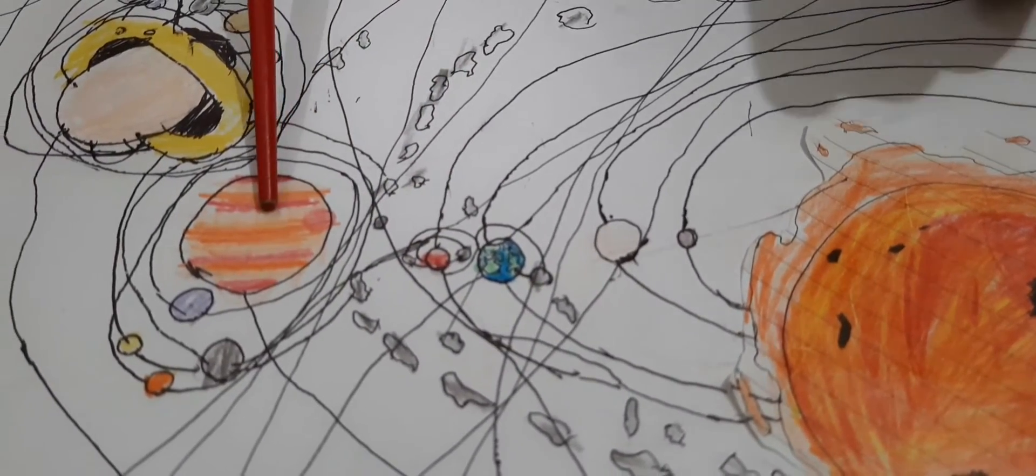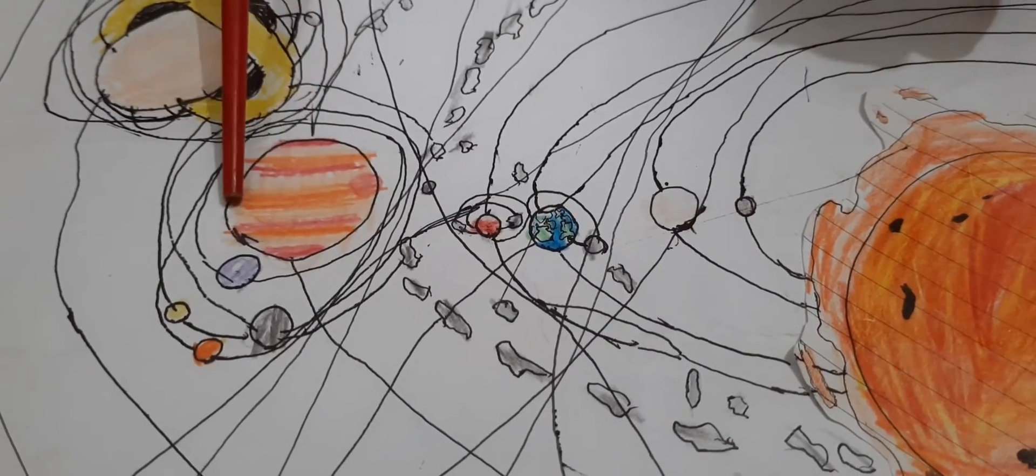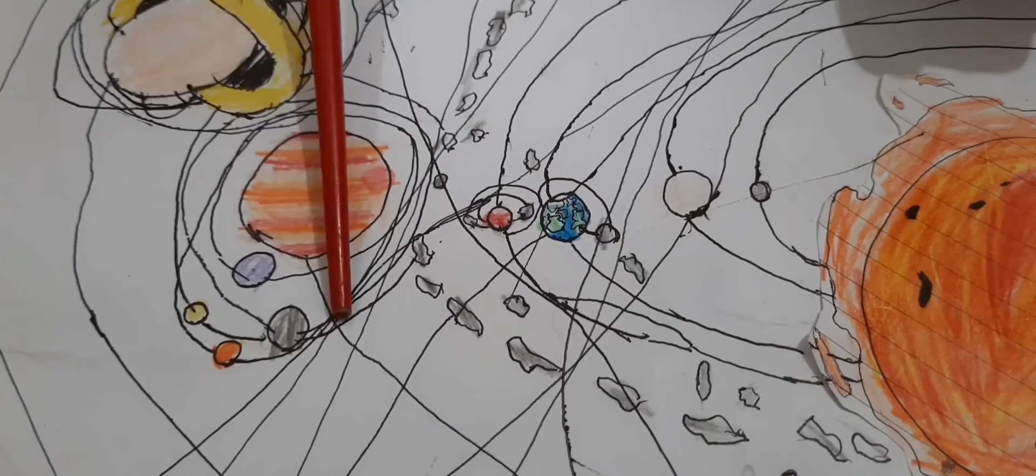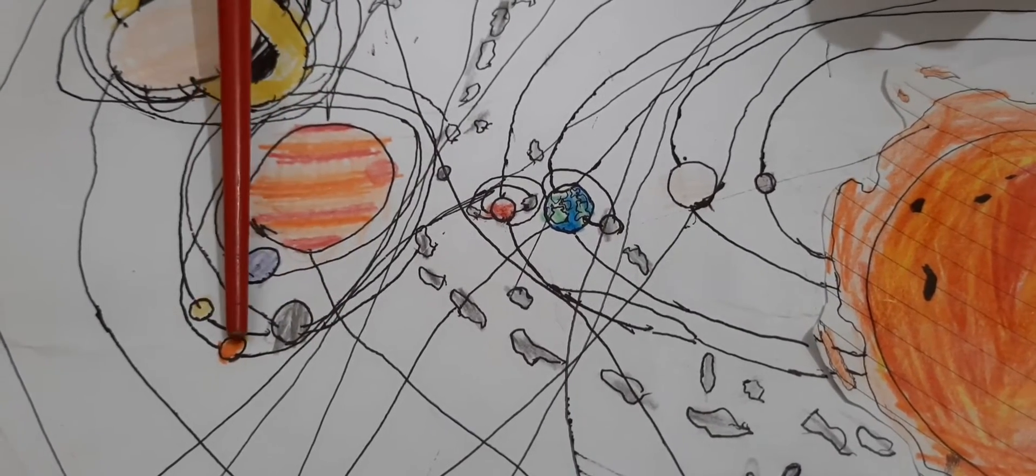Here's Jupiter. It has four moons. Well, not really. I just picked a few of them. Here's Callisto, Ganymede, Io, and Europa.